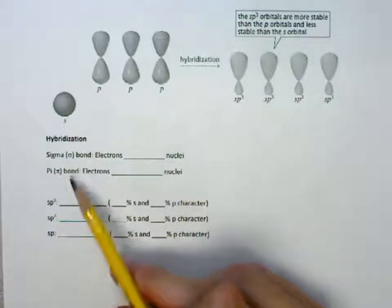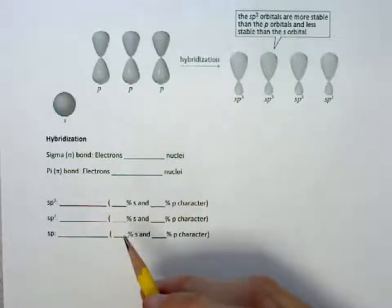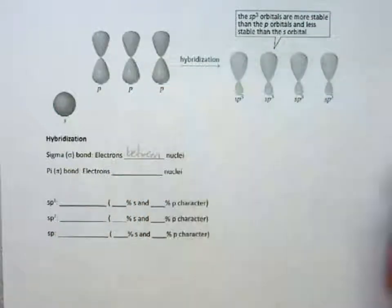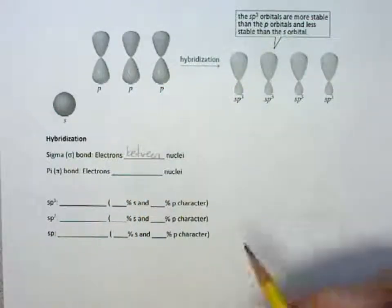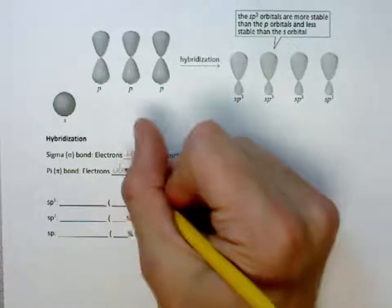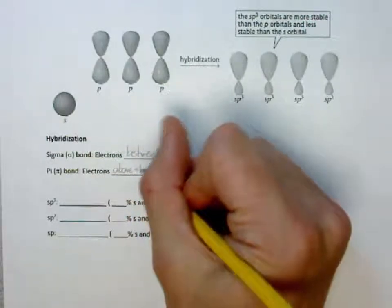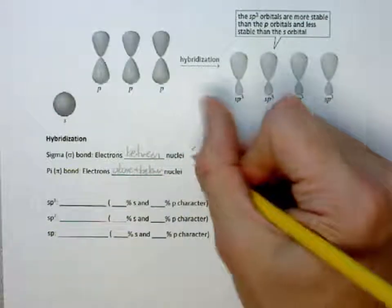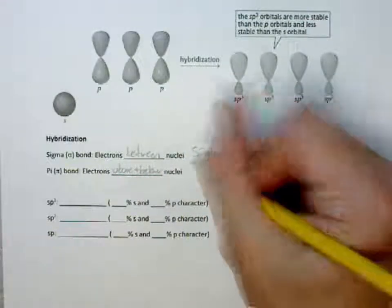For the hybridization, we have sigma and pi bonds. For sigma bonds, the electrons are going to exist between the nuclei. And for pi bonds, they're going to exist above and below. For sigma bonds, those are going to be your single bonds.